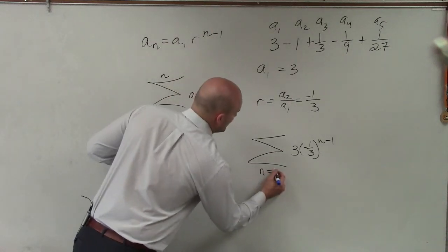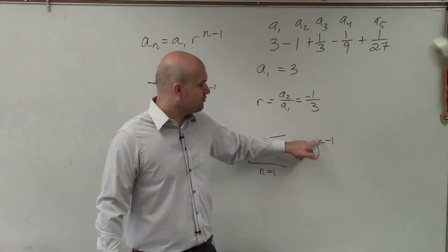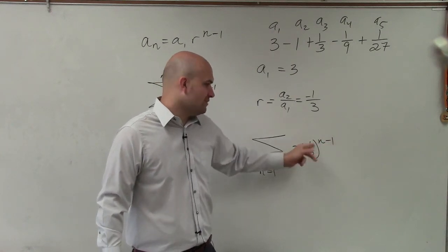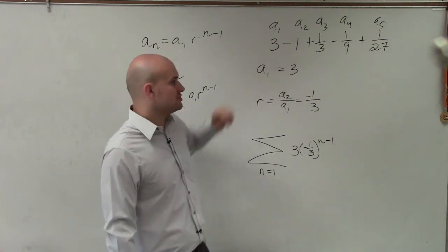The reason why I want to start at n equals 1 is because if I plug in 1 for n, that's 1 minus 1 equals 0. Negative 1/3 to the 0 power is 1. 3 times 1 is going to give us 3, which gives our first term.